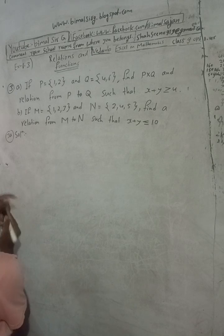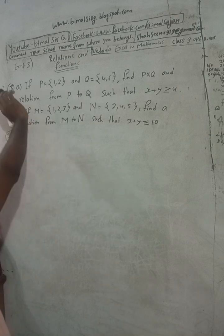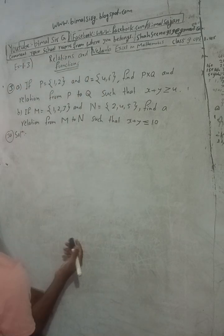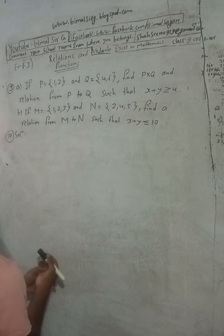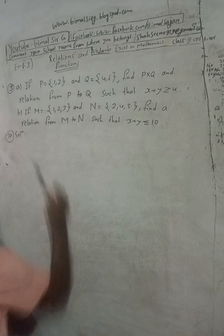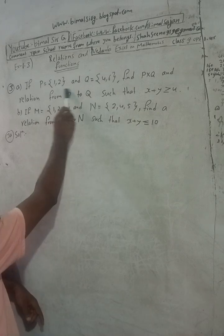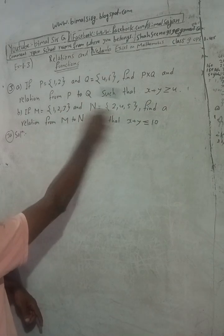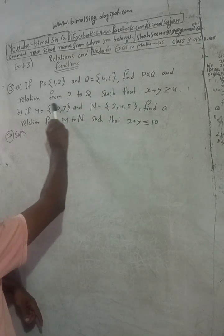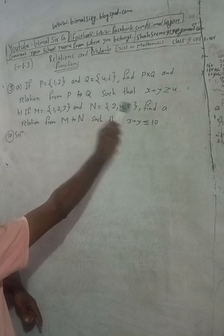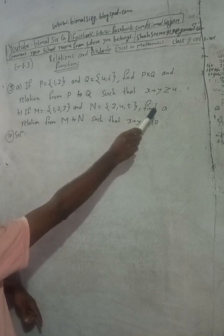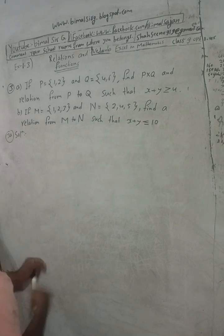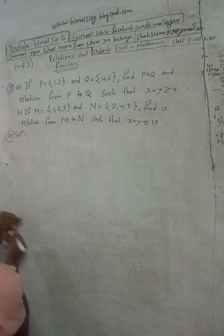Okay, now let me start this question solution. If P is equal to {1, 2} and Q is equal to {4, 6}, find P cross Q and the relations from P to Q such that x plus y is greater than or equal to 4.